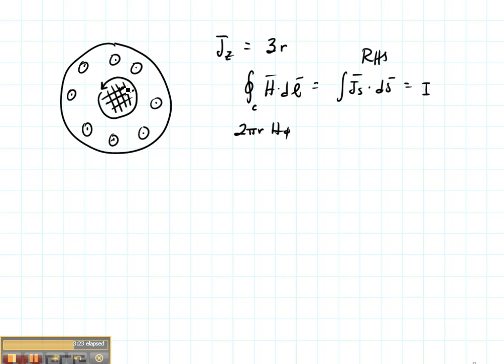The Gaussian surface has a radius of R. So I'm going to do a surface integral where I put my JS term here. It's 3R and it's in the Z direction and I'm going to dot that with the surface. Well, the only surface that's going to have any dot product with this is going to be the Z-directed surface and that is R dr dPhi if you look at Table 3-1.